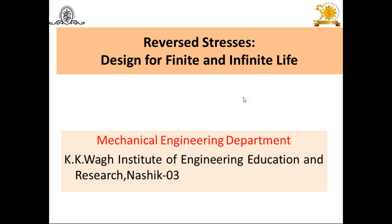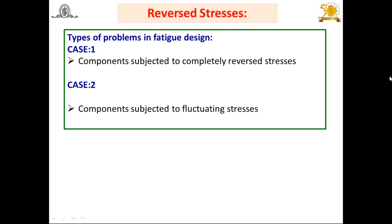Today we are going to see how to design components subjected to reverse stresses. There are two types of reverse stresses: first, general fluctuating stresses; second, completely reverse stresses. Reverse stress means during one half cycle you get tensile stress and the other half compressive, with the same magnitude, meaning sigma mean is equal to zero. For example, plus 50 newton load then minus 50 newton in one cycle.